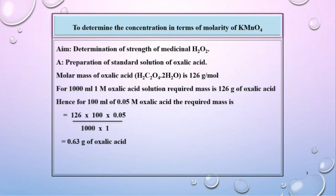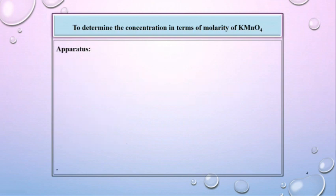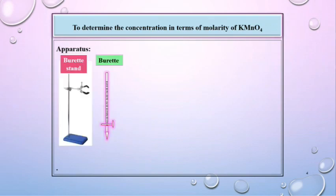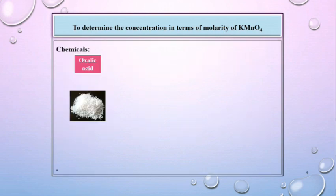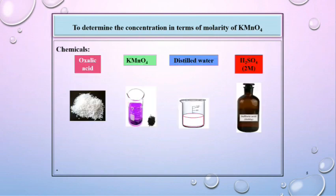Answer is 0.63 gram of oxalic acid. Apparatus: burette, 100 ml standard flask, conical flask, funnel, beaker, etc. Chemicals: oxalic acid, KMnO₄ solution, distilled water, and 2 molar H₂SO₄ solution.